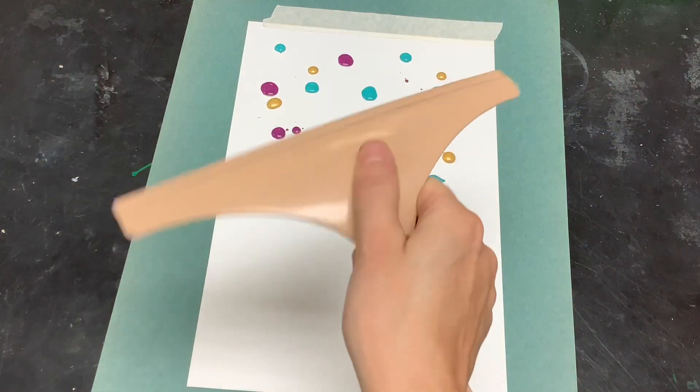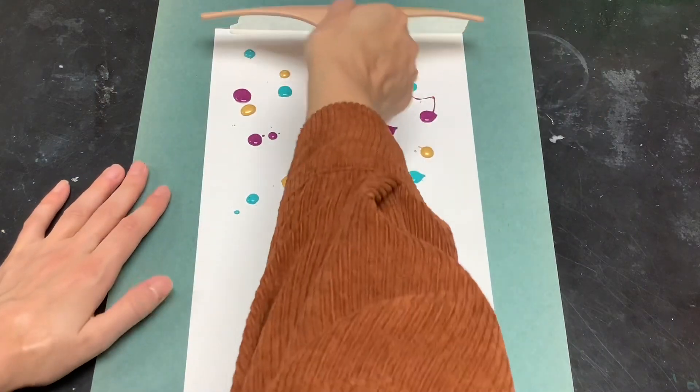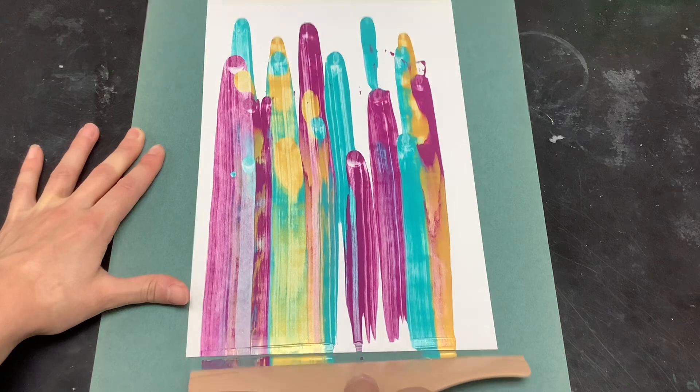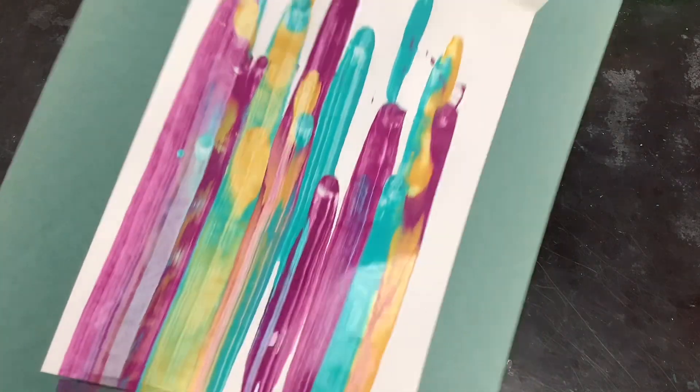Then you'll take a squeegee, holding it tightly, and pull the squeegee all the way down your page.